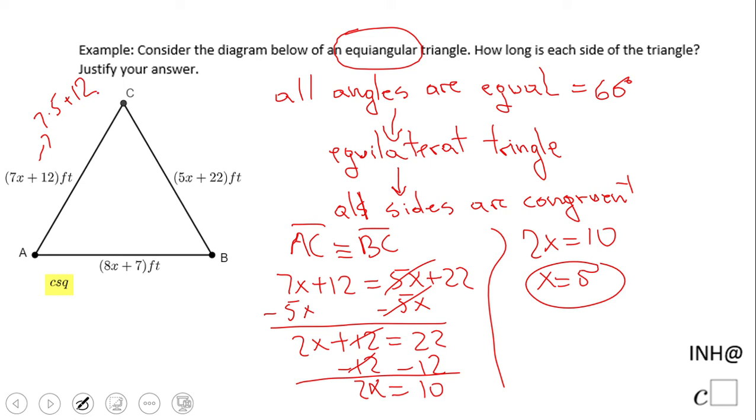What about this side? 5 times 5 plus 22, that's 25 plus 22, which is 47. And this side here, 8 times 5 plus 7, that will be 47. All sides are equal.